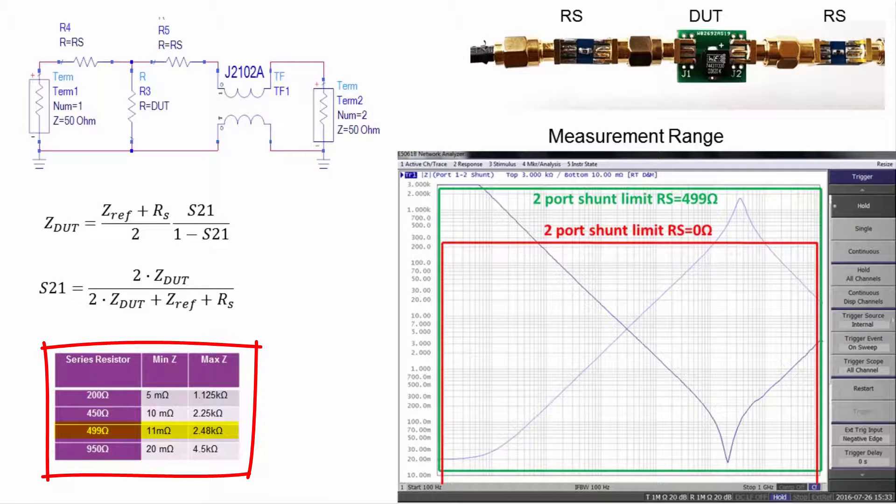Adding 499 ohm series resistors scales the measurement range to 11 milliohms minimum and 2500 ohms maximum, which supports the measurement of this inductor.